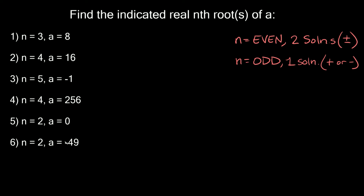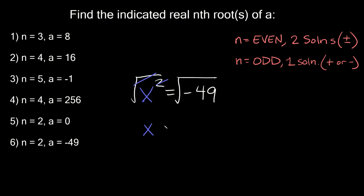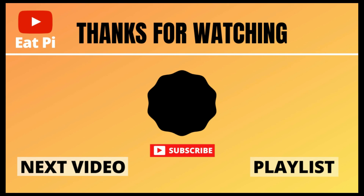Lastly, number 6: n is equal to 2 and a is equal to negative 49. So we have x squared equal to negative 49. Even power, so two solutions. Taking the square root of both sides gives x equal to the square root of negative 49. But we cannot take the square root of a negative number, so we have an imaginary solution. The square root of 49 is 7, and since it's negative it becomes 7i. And since we had an even exponent — two solutions — the answer is positive or negative 7i. If you found the video helpful, leave a thumbs up, and if you have questions or want other examples, let me know in the comments.